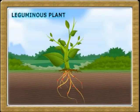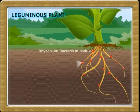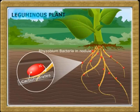In symbiosis, two organisms live together and are mutually beneficial to each other by providing food, shelter, or both. For example, nitrogen-fixing bacteria live in the roots of leguminous plants. These plants provide food and shelter to the bacteria, while the bacteria provide nitrogenous compounds to the plant.